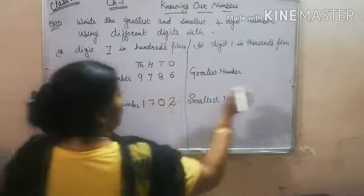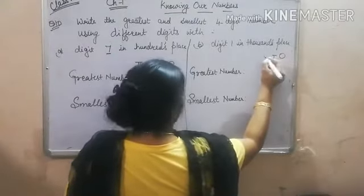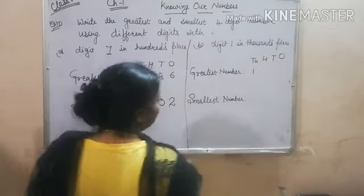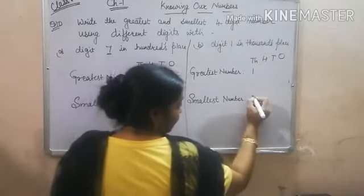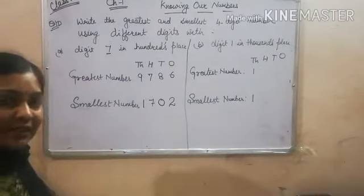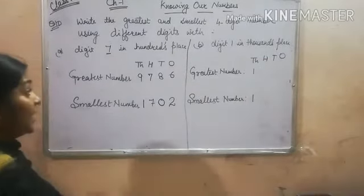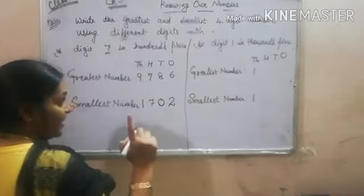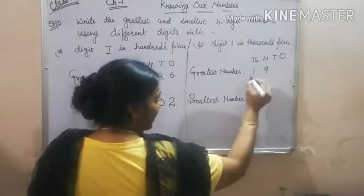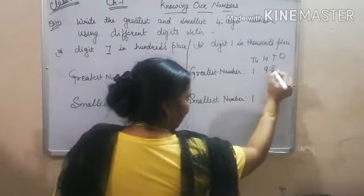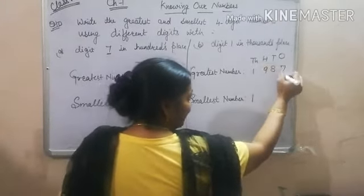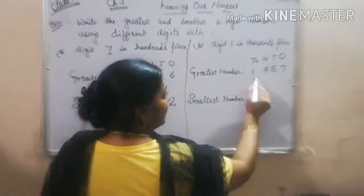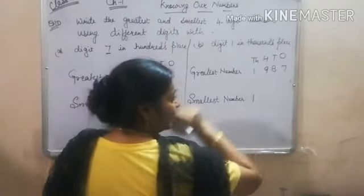Now we have to fix 1 in the 1000s place in both numbers. For the greatest number, write the next greatest digits: 9, then 8, then 7. So the greatest number becomes 1987.